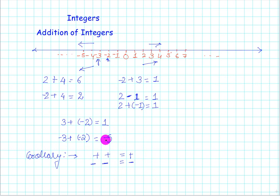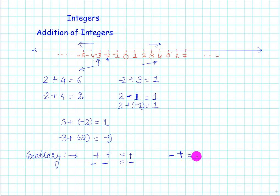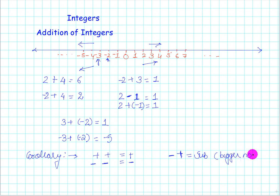The second corollary: if I have a negative number, say minus 2, and I add a positive number, say 4, I get the result through subtraction, not addition. What happens is it becomes 4 minus 2, which gives 2 — so a subtraction is occurring. The sign of the result is that of the bigger number. Here 4 is the bigger positive number, so the result is positive 2.